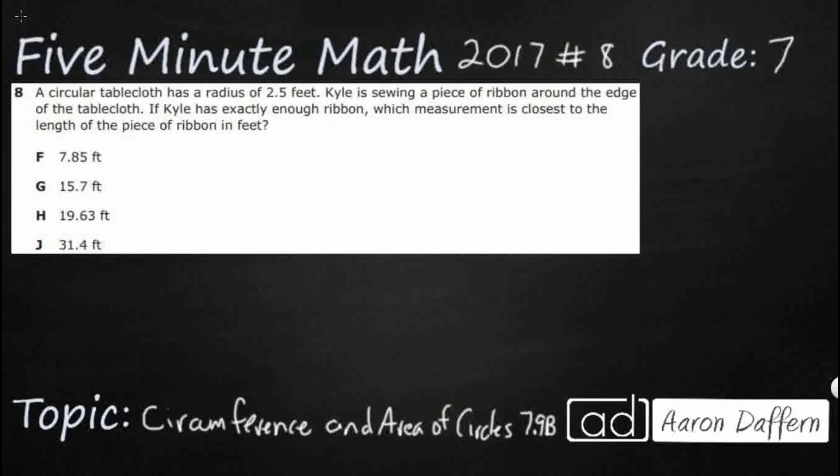A circular tablecloth has a radius of 2.5 feet. So let me draw this circle here. Let's make sure we label what that radius is. So here's my circle. The radius is any line that goes from the center of a circle out to its side. We'll label that right there. That's my radius and that's 2.5 feet.